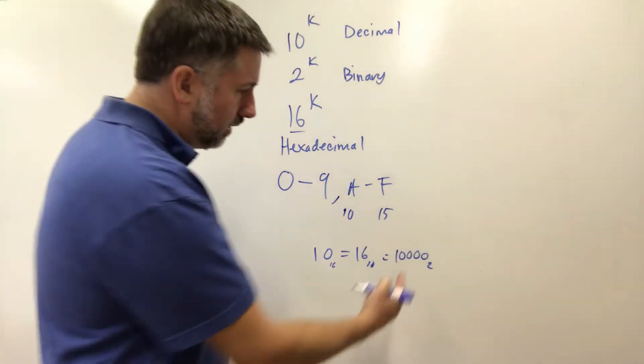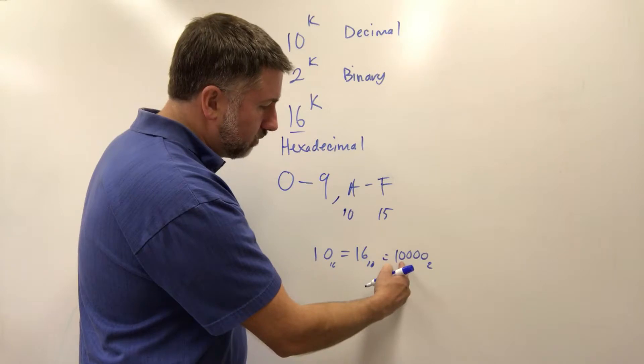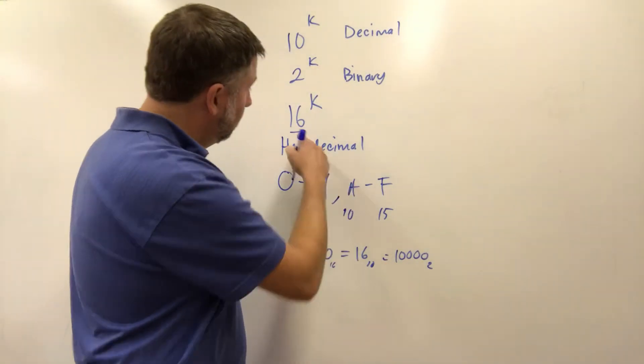How do I know that? Well this is two to the power of zero, two to the power of one, two to the power of two, two to the power of three, and two to the power of four which is sixteen.